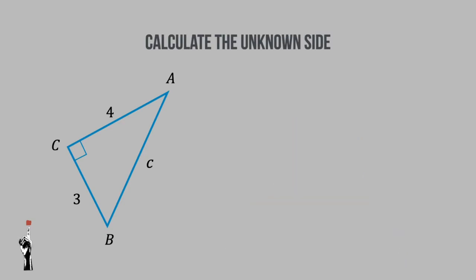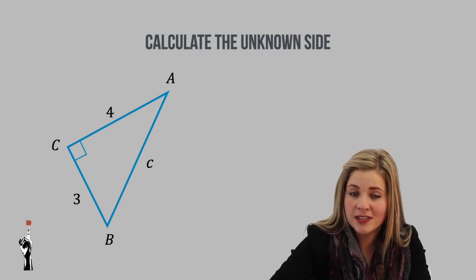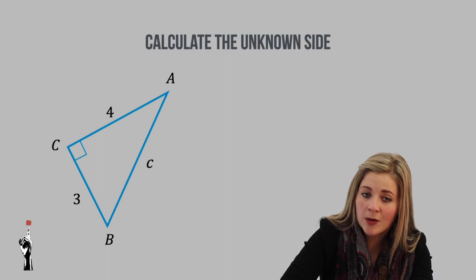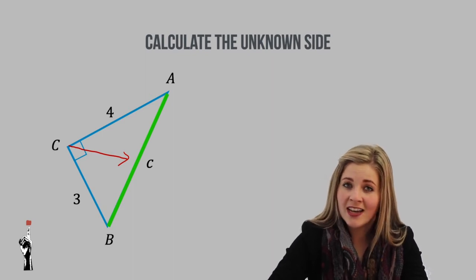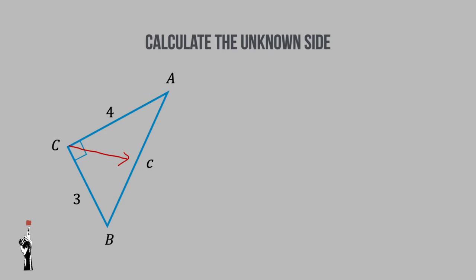Now it's time to do our first example: calculate the unknown side. Using the Pythagorean theorem, we need two of the three sides known, and the third side is what we calculate. First, find the hypotenuse — it is always opposite the 90-degree angle, making it side C, which is also our unknown. Side B is opposite angle B, and side A is opposite angle A. So we write the formula: A squared plus B squared equals C squared. Remember to always give recognition to Pythagoras by writing 'Pyth'.